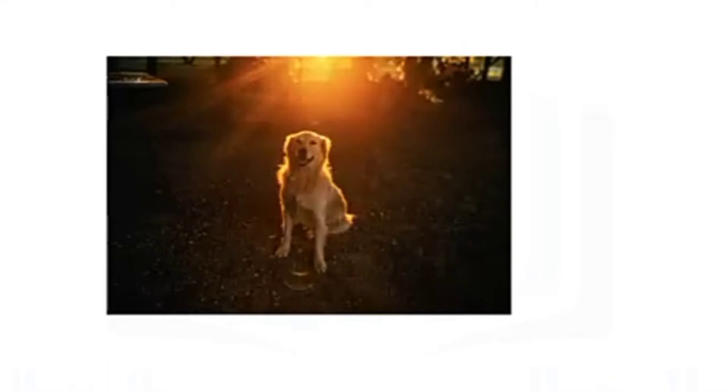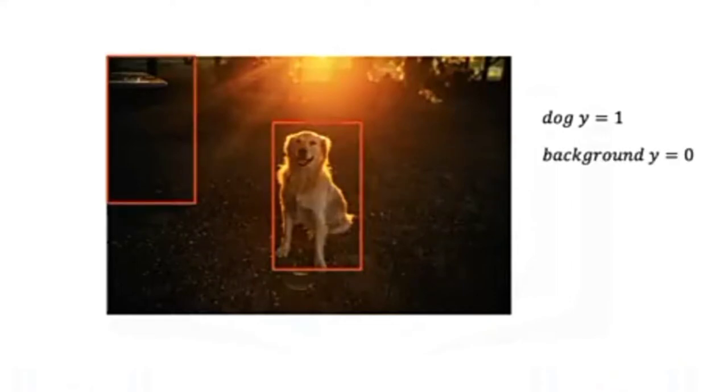If we want to detect a dog, we consider a fixed window size. If chosen properly, the dog will occupy most of the window. This is essentially a sub-image that we would like to classify as a dog. The other sub-images would be classified as background. Each image that does not contain the dog would be considered a background class.